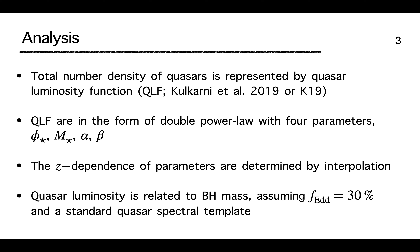These four parameters are redshift dependent, and K19 reports the values at 25 redshifts. To obtain smooth functions of z, we interpolate these parameters at 50 evenly separated values of z. Finally, we can relate quasar luminosity with the total black hole mass, assuming that f-Eddington is 30% and a standard quasar spectrum template.